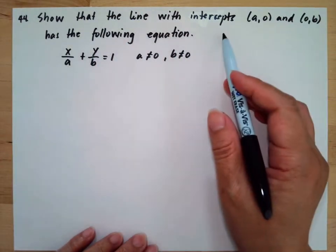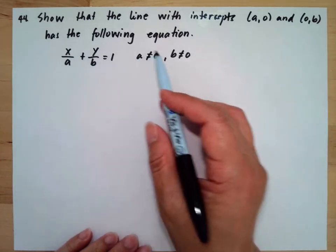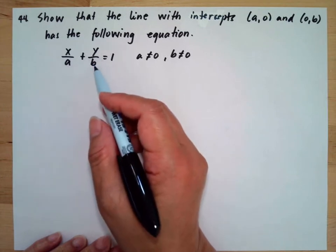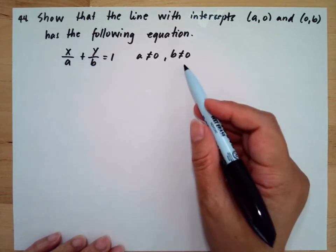Show that the line with intercepts (a,0) and (0,b) has the following equation: x/a + y/b = 1, provided a ≠ 0 and b ≠ 0.